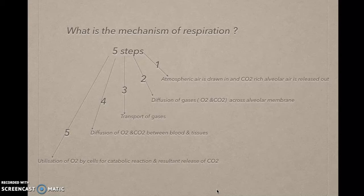The second step is the diffusion of gases — oxygen and carbon dioxide — across the alveolar membrane. The diffusion of gases takes place in the lungs from the alveoli to the blood. Oxygen moves from the lungs to the blood, and carbon dioxide moves from the blood to the lungs.